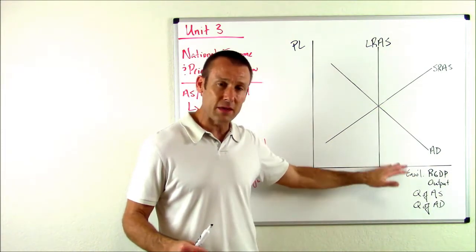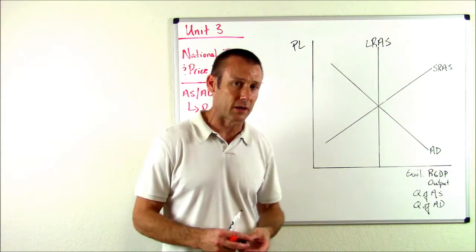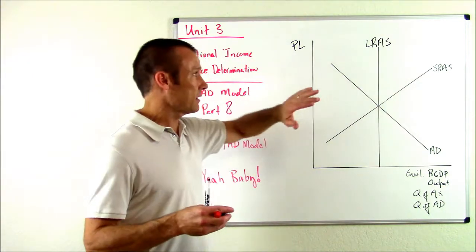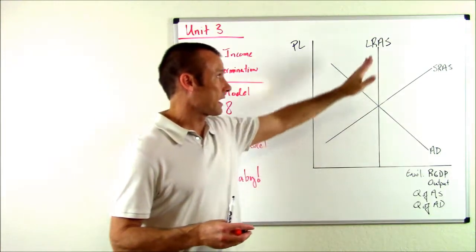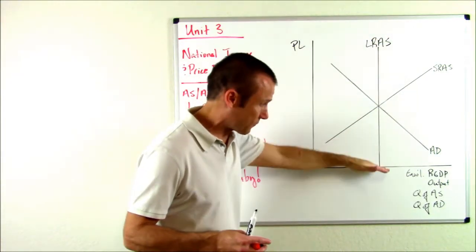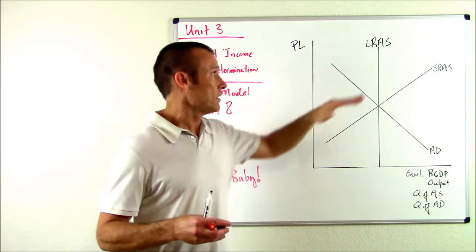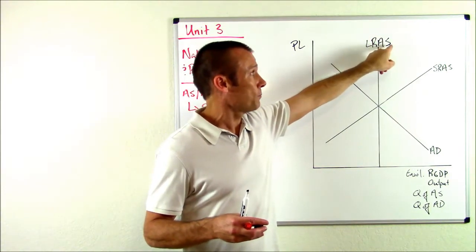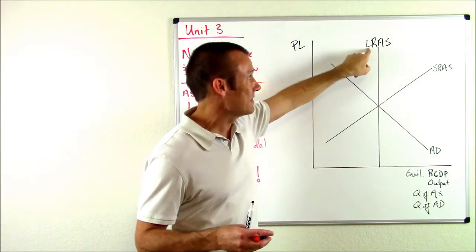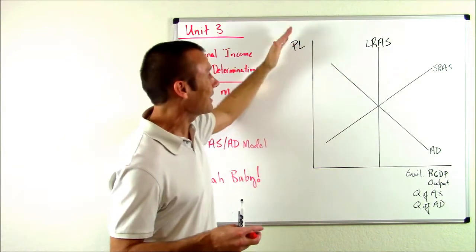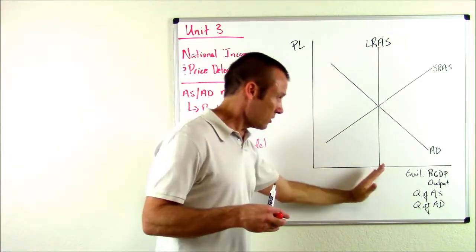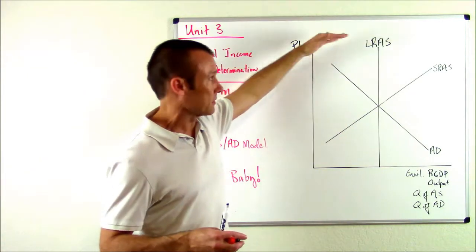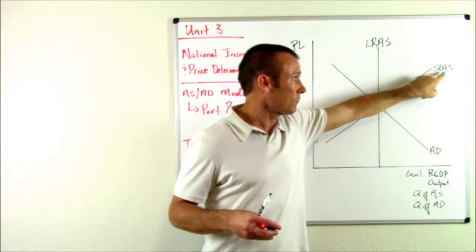I've got my graph, I've got my curves. There's three big curves on this graph. I got my LRAS - of course it is vertical, because our total production, that's what AS is, in the long run is not dependent upon the price level. It will be a certain amount regardless of price level, that's why it's vertical.